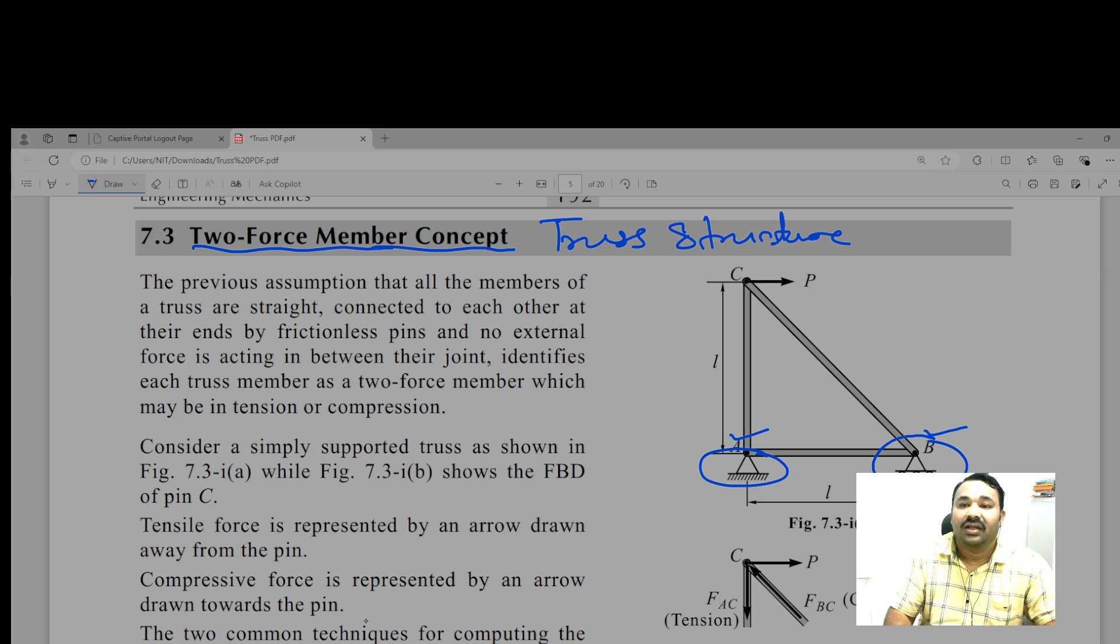And at C, force P is acting. Now taking example of the member CB, so CB either may be subjected to the tensile forces like this way or this way.